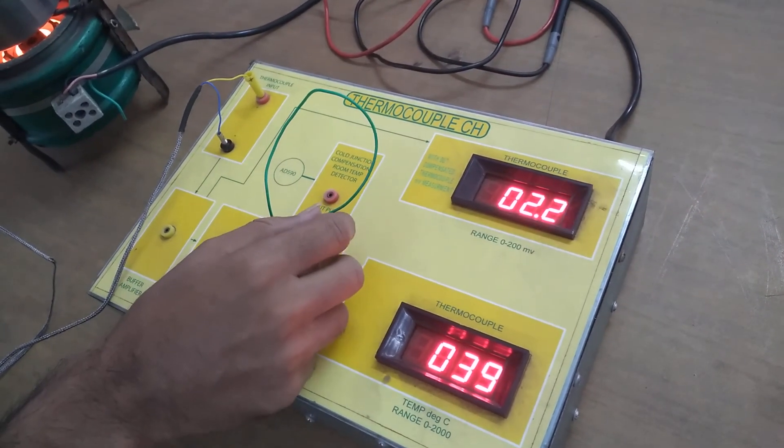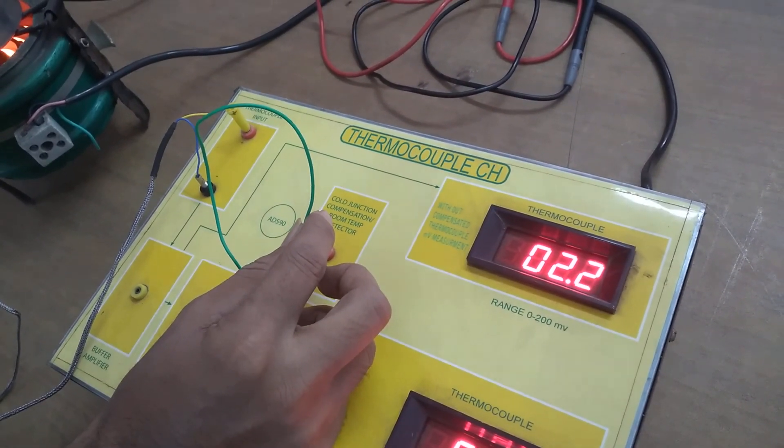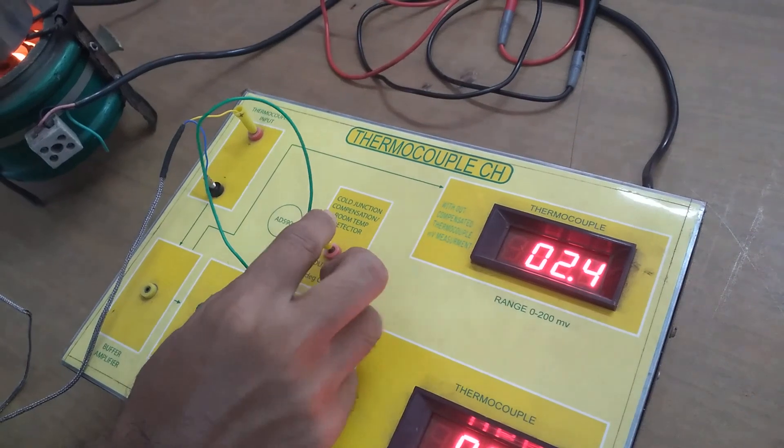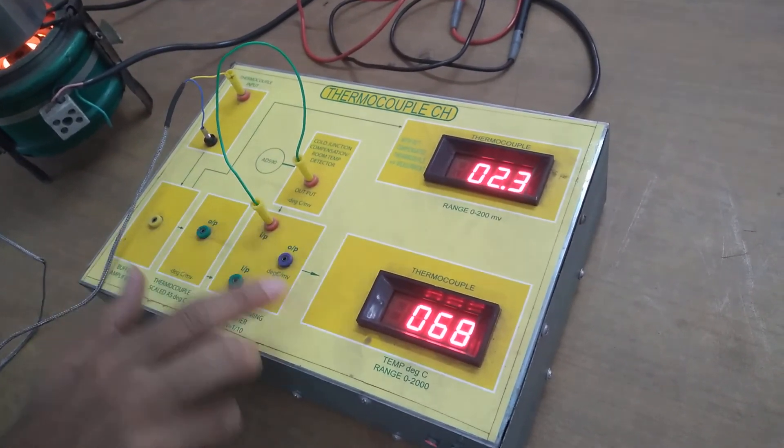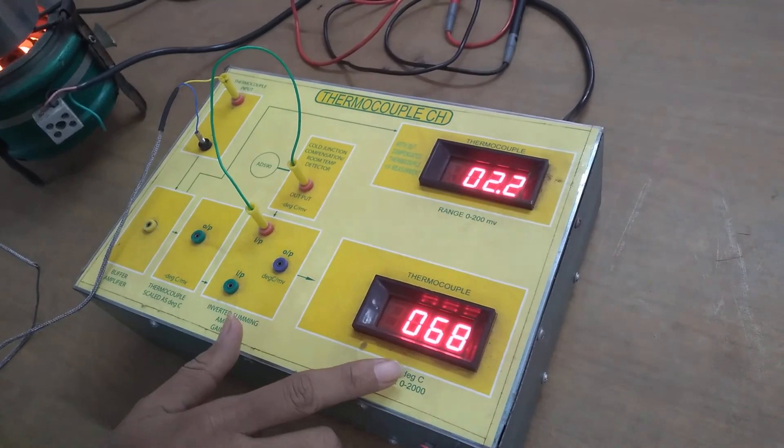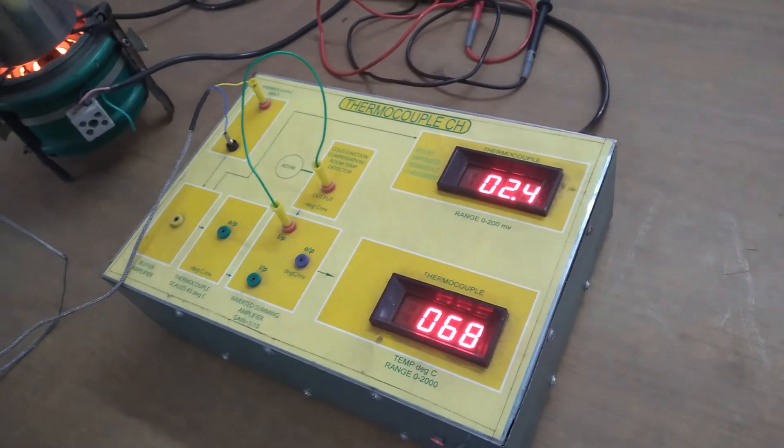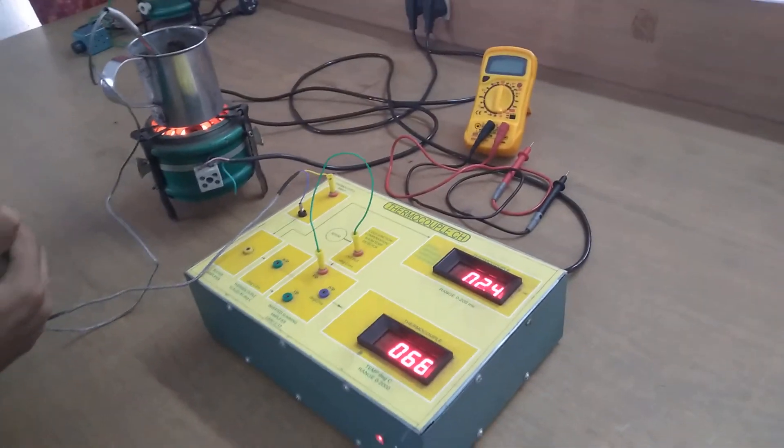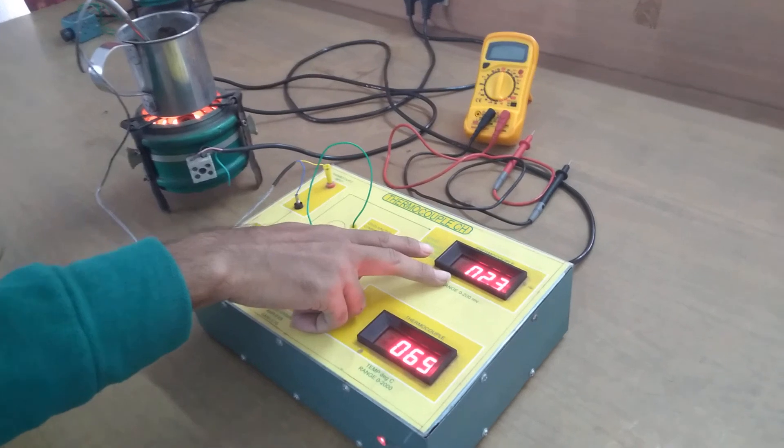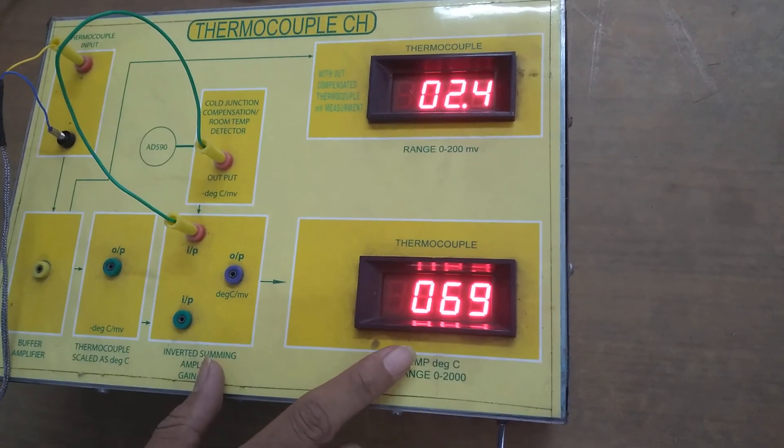But if we go for cold junction compensation, which is how a thermocouple conditioning circuit should be done, what we find is that the actual process temperature was 68 degree centigrade. Now as temperature keeps on increasing you will find that this millivolt will also increase and correspondingly this temperature display will keep on increasing.